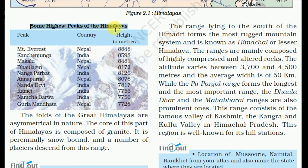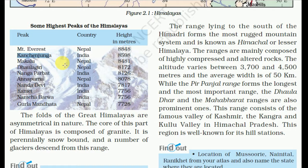Here are some of the highest peaks of the Himalaya. Mount Everest is the highest but it is located in Nepal, so it is not in India. The highest peak of India is Kanchenjunga at 8,598 meters height, located near the Indian and Nepal border. Makalu is the third largest peak and it is also in Nepal. Other peaks in India include Nanga Parbat, Nanda Devi, Kamet, Namcha Barwa, and Gurla Mandhata.